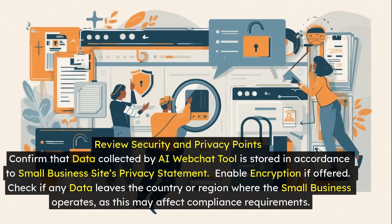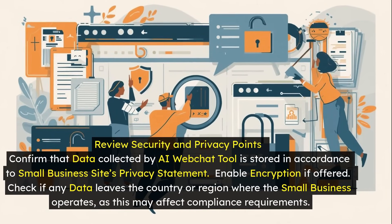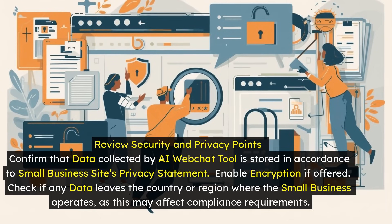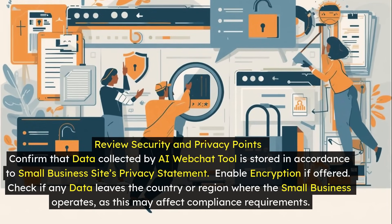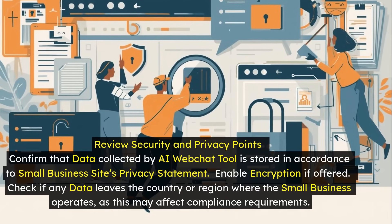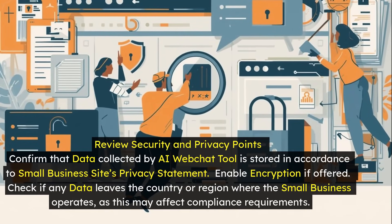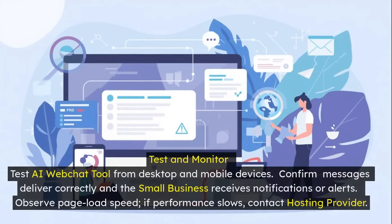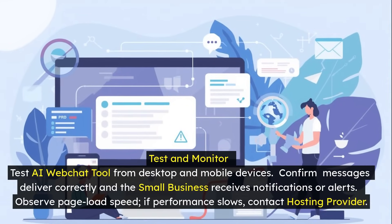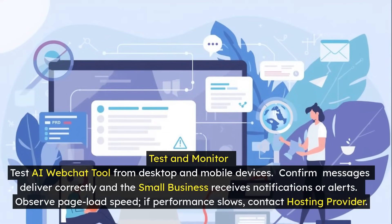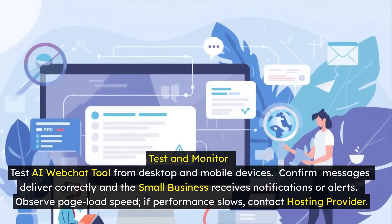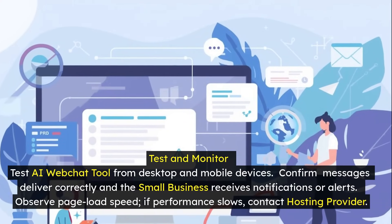Review security and privacy points: confirm that data collected by the AI web chat tool is stored in accordance with the small business site's privacy statement. Enable encryption if offered. Check if any data leaves the country or region where the small business operates, as this may affect compliance requirements. Test the AI web chat tool from desktop and mobile devices, confirm messages deliver correctly, and observe page load speed. If performance slows, contact the hosting provider.